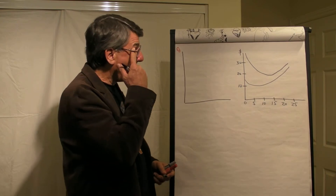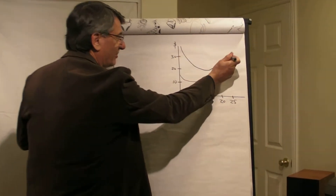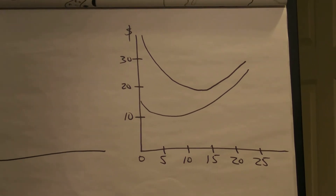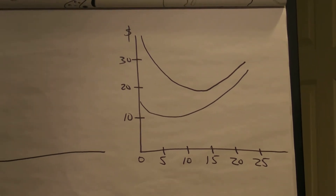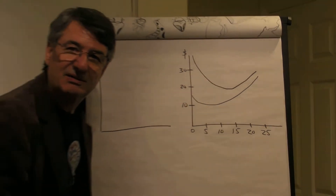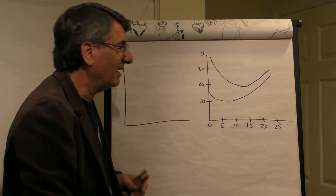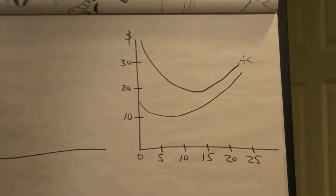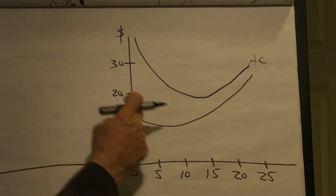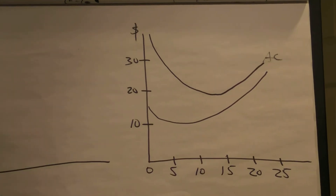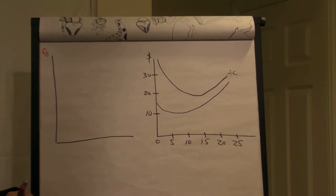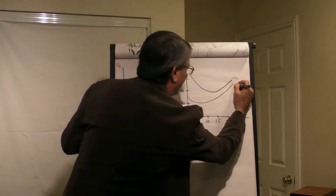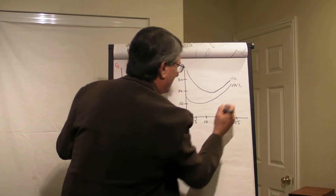We have here this U-shaped graph. What could it be, disinterested econ student? I'm sure you said average cost. What's this other one, this lower U-shaped one? Right — average variable cost. I'm trying to make this as life-like as I can.